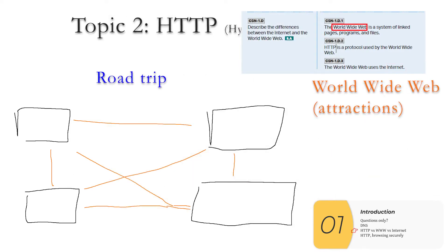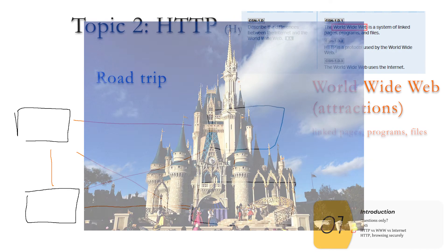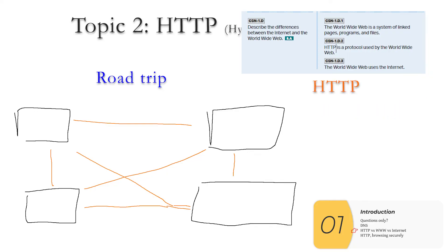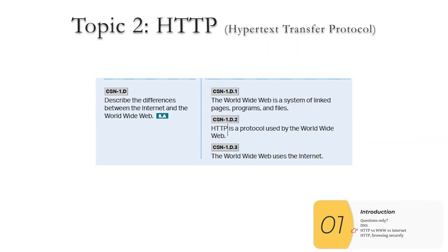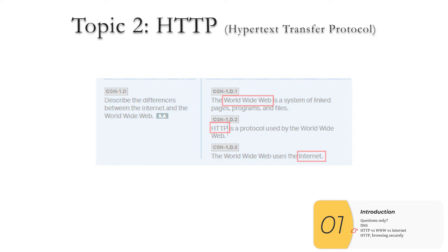The World Wide Web — the magic words here are 'linked pages,' 'programs,' and 'files.' You can think of it like the attractions on your road trip. Lastly, you'll need to know about HTTP, which is a protocol — that's just the rules you're following. You'll see some words, especially if you watch the Code.org video: 'get,' 'post' — you will not need to know these for the exam. The real-life analogy might be the height requirements for the rides at Disney World. That's what you'll need to know for the APCSP exam with respect to the internet, World Wide Web, and HTTP, and how they connect with each other.